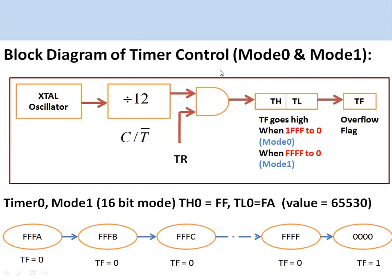The block diagram of timer control for mode 0 and mode 1 uses the crystal frequency divided by 12 for timer operation. When the timer is started using the TR bit, the value loaded in TH and TL starts counting. In mode 0, when it overflows from 1FFF to 0, the TF bit is set. In mode 1, when TH and TL overflow from 0xFFFF to 0x0000, the corresponding overflow flag is set.